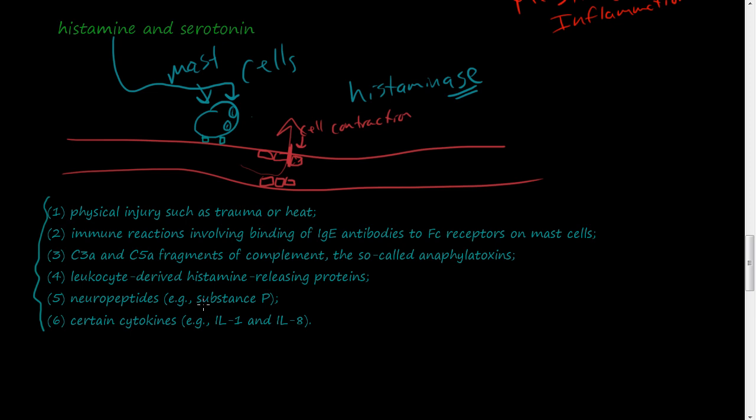The neuropeptides, specifically substance P, that has to do with pain, that will release mast histamine. And certain cytokines, interleukin-1 and interleukin-8, these will also bind to mast cells and then the histamine will be released, which will initiate the process of inflammation.